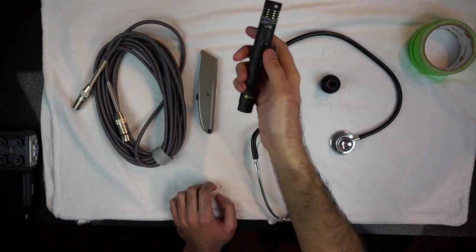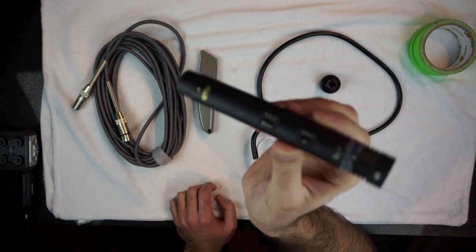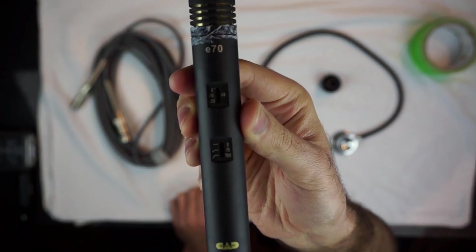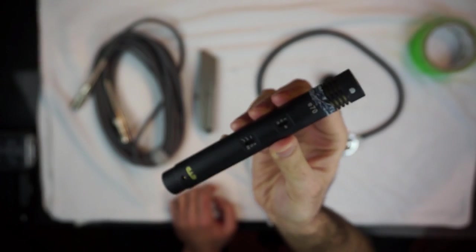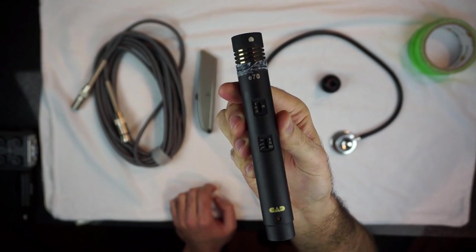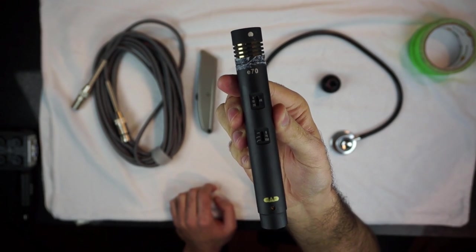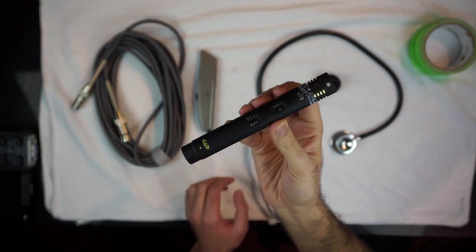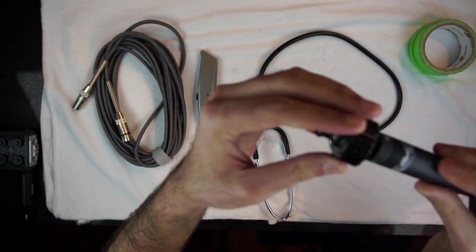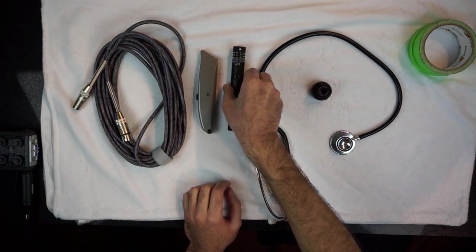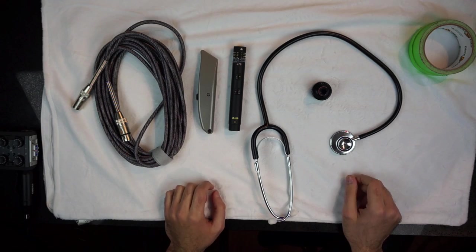Like I mentioned, we have a small diaphragm condenser microphone, and this is the CAD E70. Now you don't necessarily have to use this one. I use this one because it's cheap, it's affordable, and it's very very rugged, so you can use this however you want. You can use any small diaphragm condenser. Most of them will fit into this larger hole on the bottom. This is just the one I use because it's cheap and you can break it.